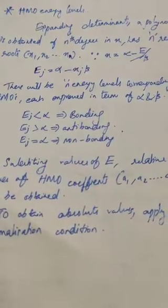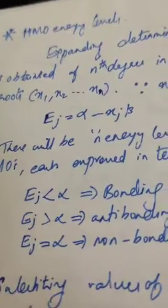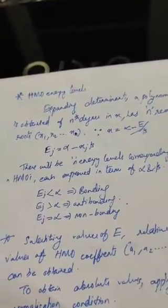Since X equals (alpha − E) divided by beta, we get the energy at the jth level as: E_j equals alpha minus X_j · beta. As the polynomial is of nth degree, there will be n energy levels corresponding to n Huckel molecular orbitals, each expressed in terms of alpha and beta. If E_j is less than alpha it is bonding; if greater than alpha it is anti-bonding; if equal to alpha it is non-bonding.